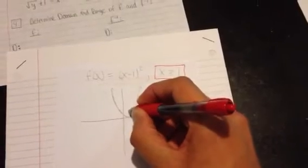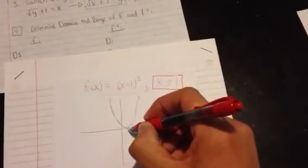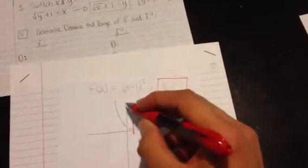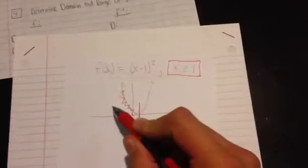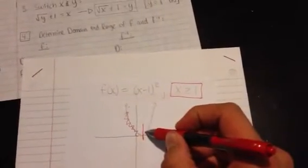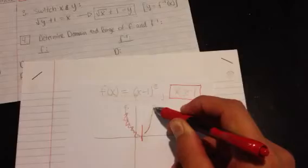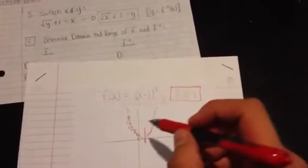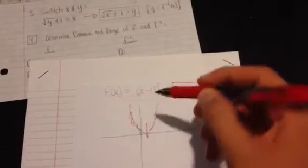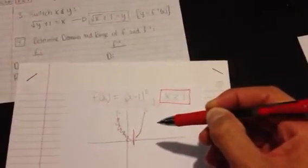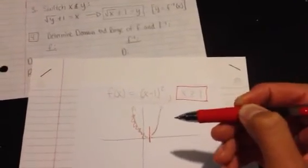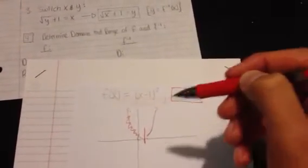But, in order to have an inverse, a restriction was added to this problem so that x can only be greater than or equal to the point 1 right over here. So, any point to the left of that right here can't be included. So, what that does is that this right over here is all you need to consider when you're finding the inverse, and not this part over here. Because if you did include this part right here, sure, a parabola can pass the vertical line test, but it won't pass the horizontal line test and therefore it wouldn't be a one-to-one function. And, in order to find an inverse, you need to have a one-to-one function.